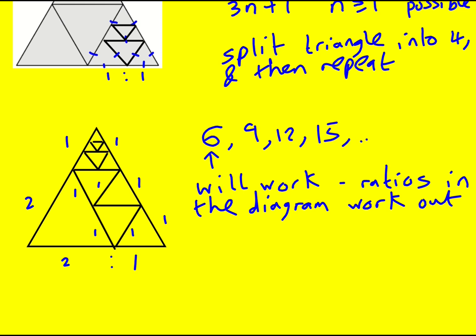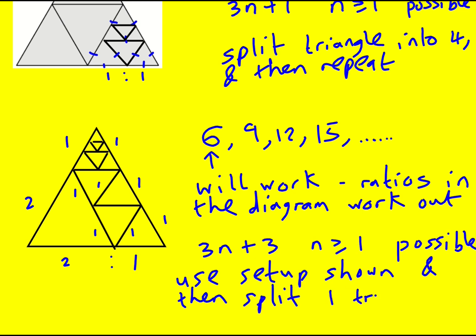12, 15 and so on and that gives me 3n+3 for n equal to one is possible. Triangle, so use setup shown and then split one triangle into four as before and repeat.